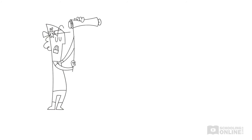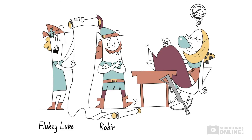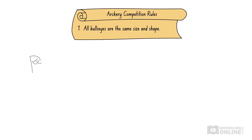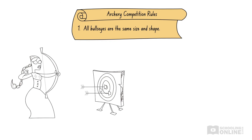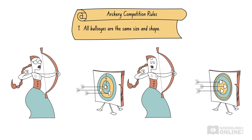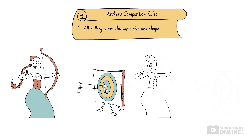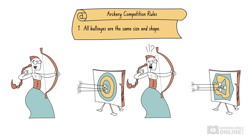For example, the archery competition runs according to a set of rules that ensure everything is kept constant between rounds, except for the archer. The first rule specifies that all bullseyes are the same size and shape. If we increased the size of the bullseye for one archer, it would require less skill to aim at. If we changed the shape from a circle to a rhombus, it would require more skill to hit. So we need to keep the shape and size of the bullseye constant between archers, otherwise we can't draw meaningful conclusions about each archer's ability to aim.